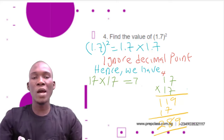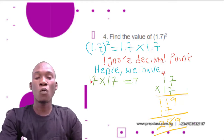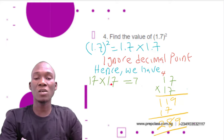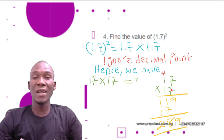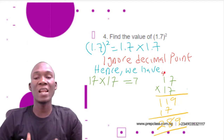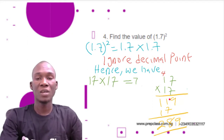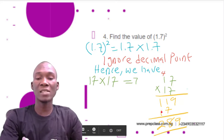To make multiplication easy, we ignore the decimal points. So instead of 1.7 we write 17, and the second 1.7 also becomes 17, giving us 17 × 17. Multiplying: 7 × 7 = 49, write 9 carry 4; 7 × 1 = 7, plus 4 carried = 11, write 11. Then 1 × 7 = 7 and 1 × 1 = 1.